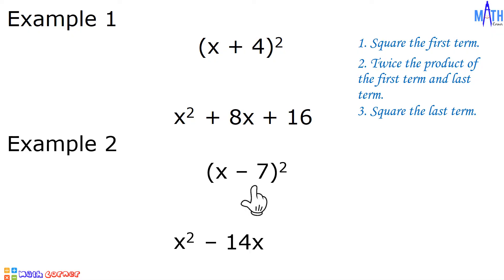Step number three: square the last term. Negative 7 times negative 7 is equal to positive 49. And the square of x minus 7 is equal to x squared minus 14x plus 49.